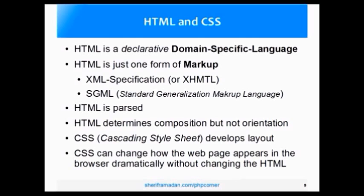There are other forms of markup as well, such as the XML specification, which is commonly referred to as XHTML. There's SGML, or the Standard Generalization Markup Language. These markup languages really intend to do a very specific thing — to allow us to transport these documents across the internet or across the web in an effective way that we can parse and be able to derive information from them. This parsing that's going on is really determining the composition, but not necessarily the orientation of the page. For example, you can have a paragraph tag, but that doesn't really tell the browser what font size it should use for that paragraph tag, how much spacing should be between lines, how much spacing to put around the paragraph itself, how to indent that paragraph, or whether to show it in the center of the page.